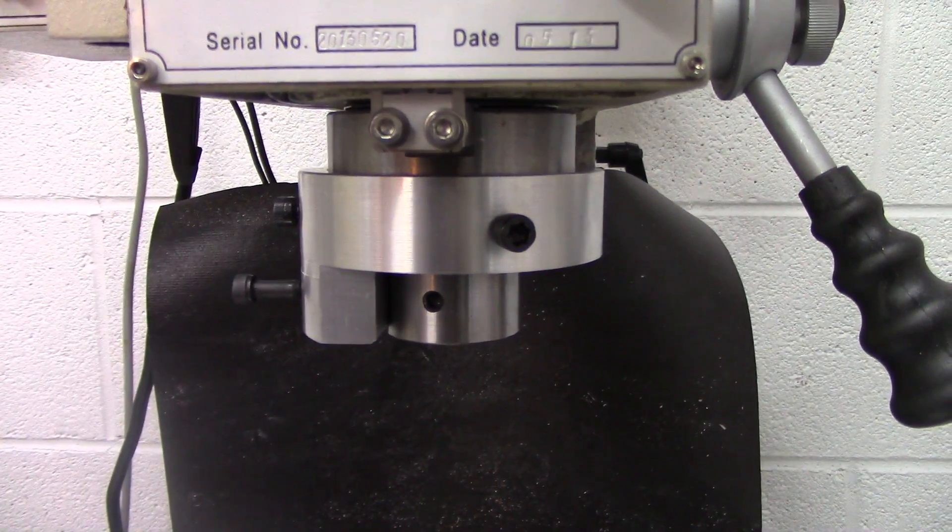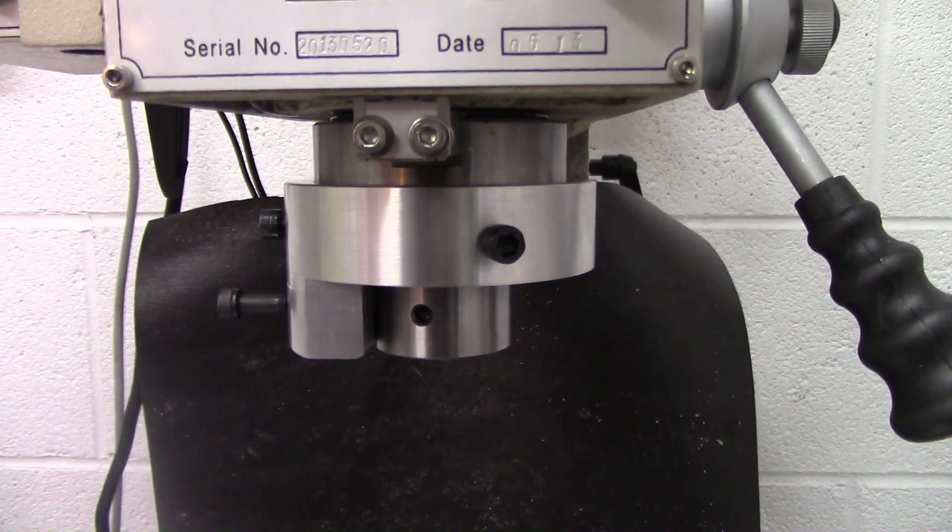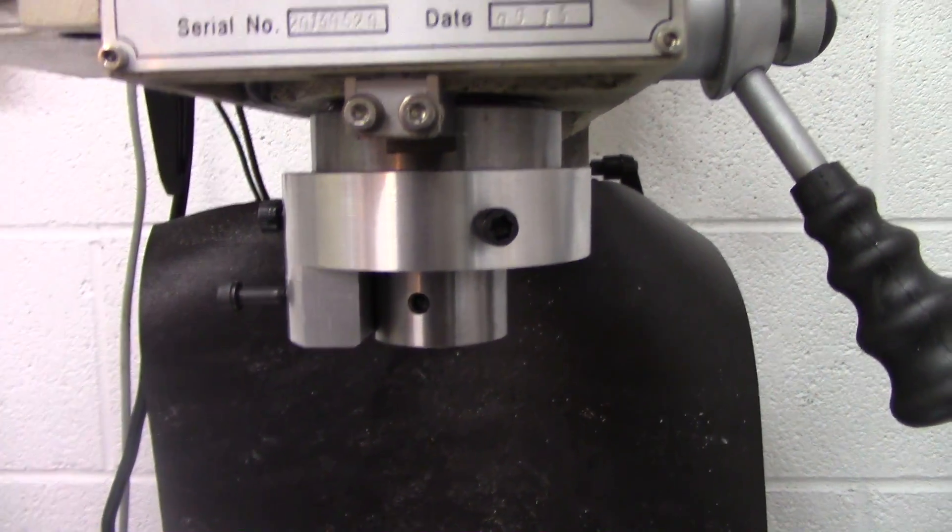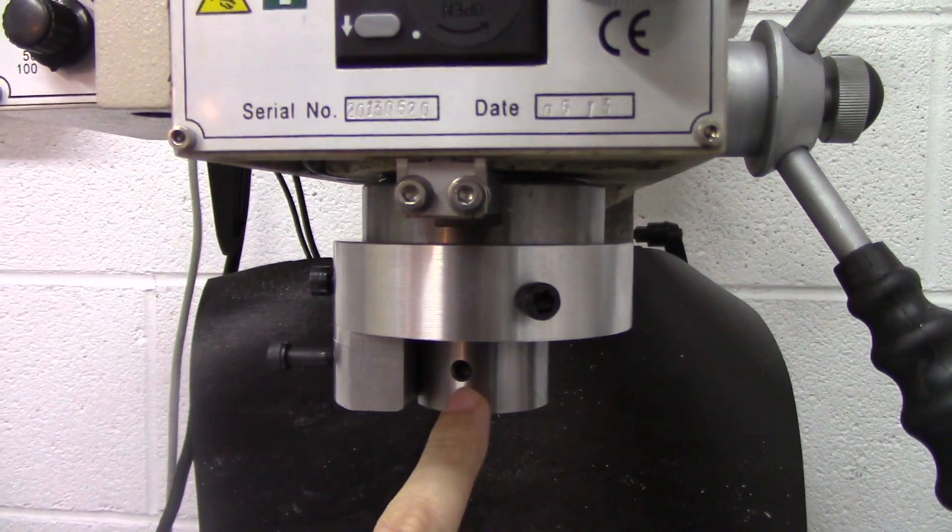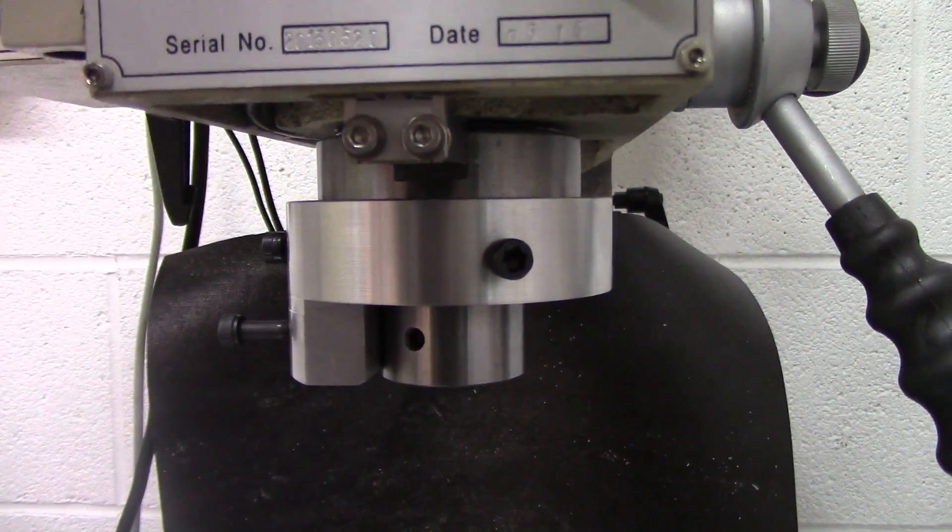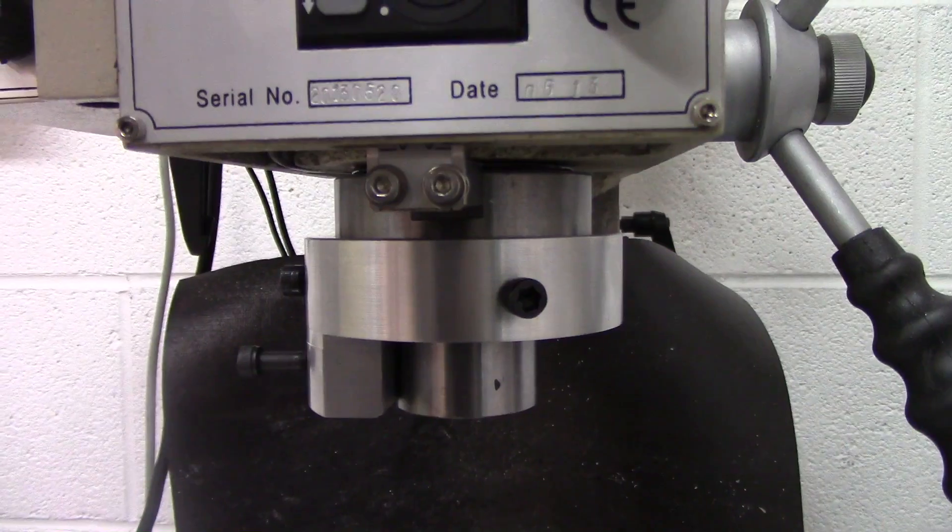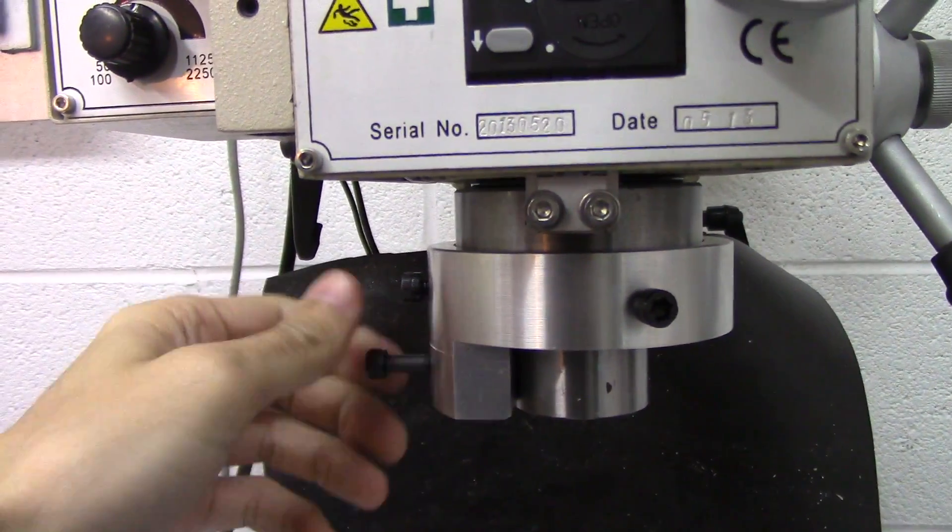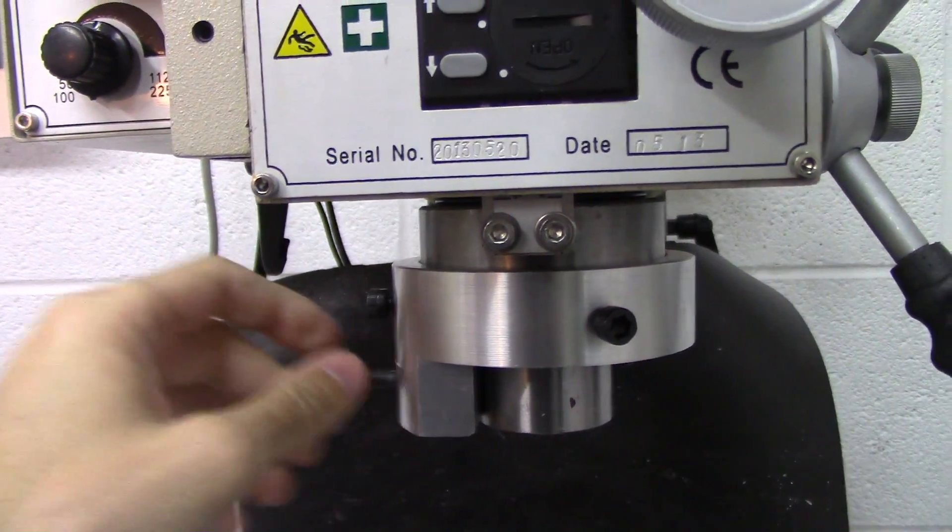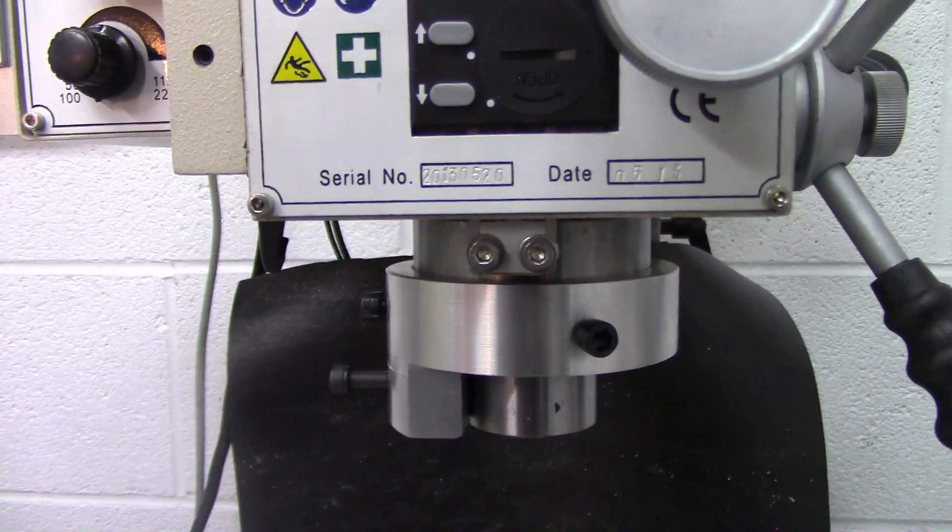Alright guys, so here's the finished spindle lock. Let me show you how it functions. All you have to do is when I turn the spindle over this way, there's a little hole there and all I have to do is screw this bolt in and it screws right into the hole and locks it in place.